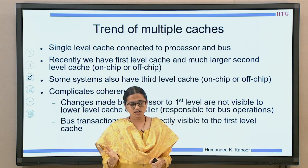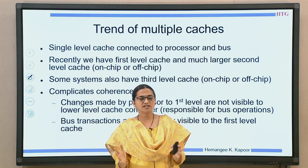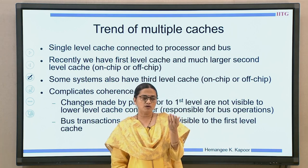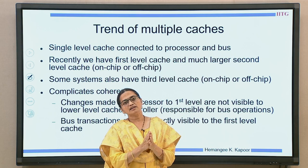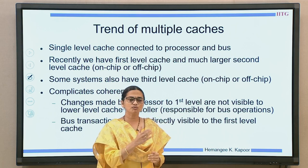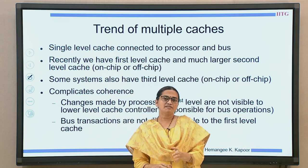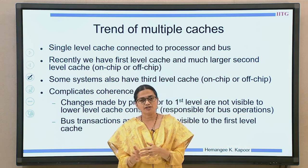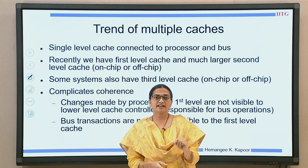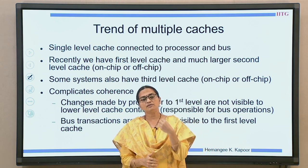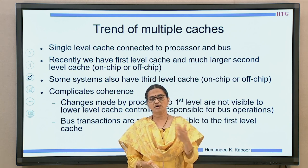We have multiple level caches because they help in faster processor request or response time. When you go to a first level cache it is supposed to be much faster, and to reduce the memory latency gap we want to introduce more and more levels of cache in the memory hierarchy. The first level cache is smaller, the next level is bigger, and so on. Most recent systems have multiple levels — they could have the second level on-chip or off-chip, and even the most recent ones have a third level cache.